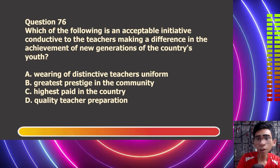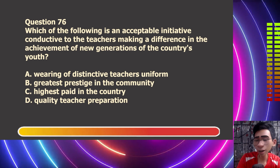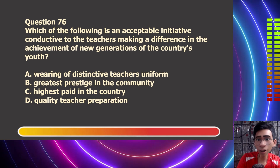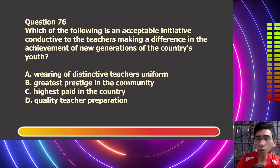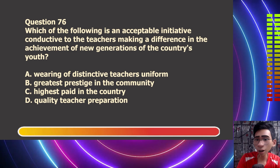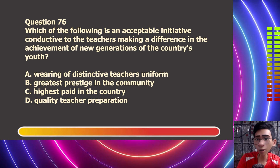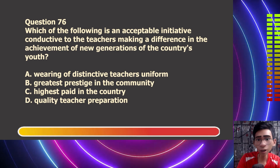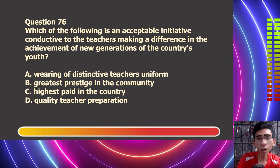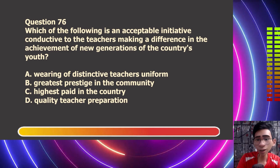Question number 76. Which of the following is an acceptable initiative conducive to teachers making a difference in the achievement of new generations of the country's youth? Letter A, wearing of distinctive teacher's uniform. Letter B, greatest prestige in the community. Letter C, highest paid in the country. Letter D, quality teacher preparation.